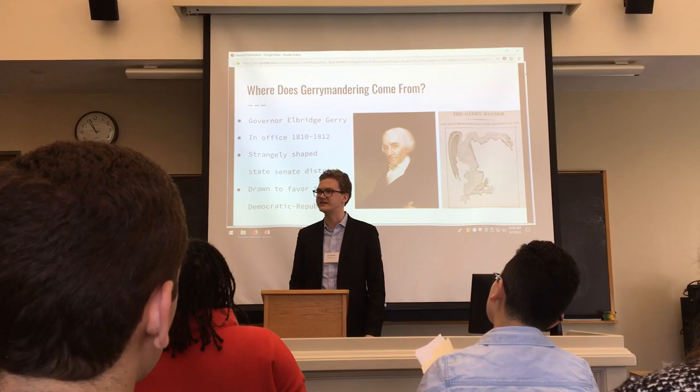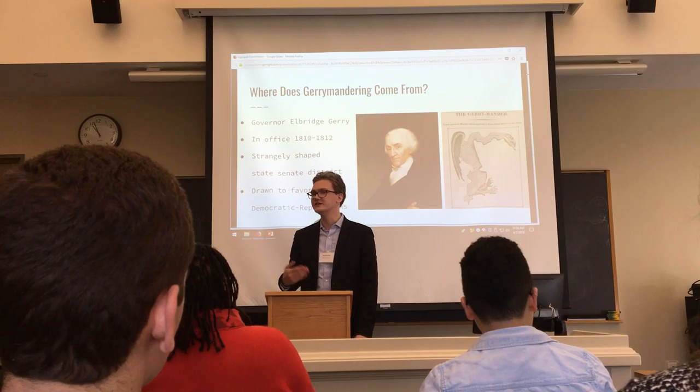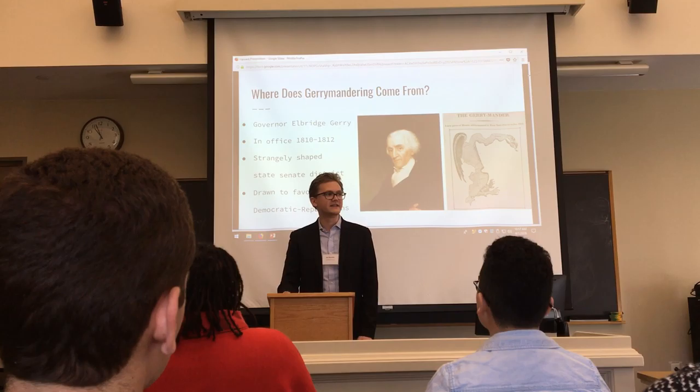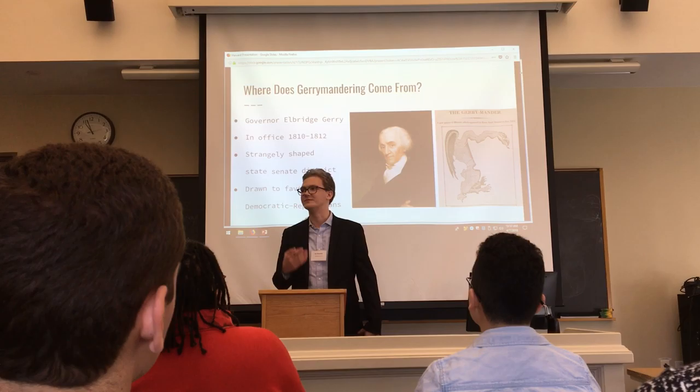The first gerrymander was actually from right here in Massachusetts in the 1810 round of redistricting. The governor at the time was a man named Elbridge Gerry. He had a hand in shaping a state senate district in Essex County in the northeast portion of the state that would favor his party, the Democratic-Republicans, over the opposition Federalist Party. Contemporaries at the time were very unimpressed by this district — they likened it to a salamander, and then they combined that with his name and came up with the term gerrymander.